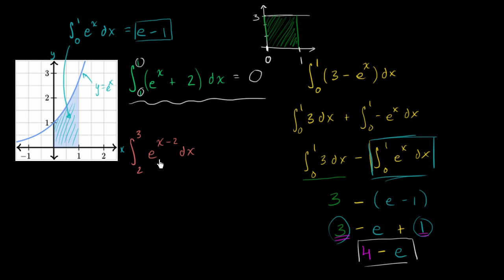Now what about this one? This one is interesting. We have different bounds here: the definite integral from two to three. And instead of e to the x, we have e to the x minus two.